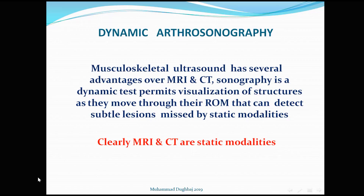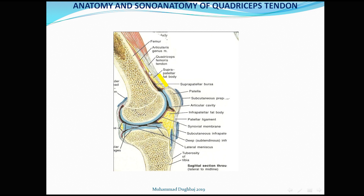Musculoskeletal ultrasound has advantages over MRI and CT because it is a dynamic test that permits visualization of structures as they move through the range of motion, and can detect subtle lesions missed by static modalities. MRI and CT are static modalities. Here is the extensor mechanism, which is composed of the quadriceps tendon including the patella and the patellar tendon, and this is the position of our probe during examination in long sagittal section.